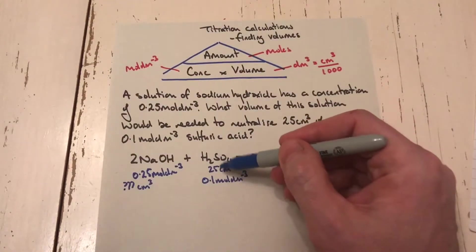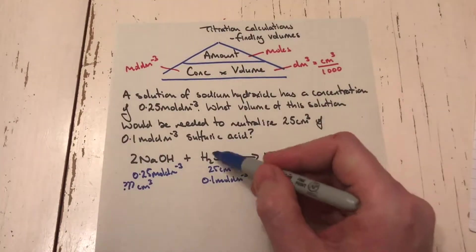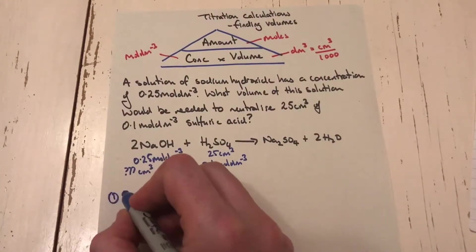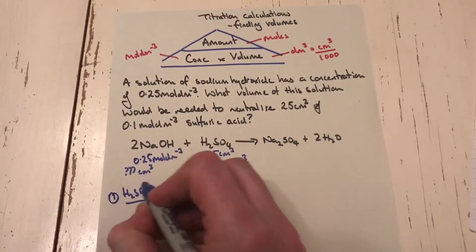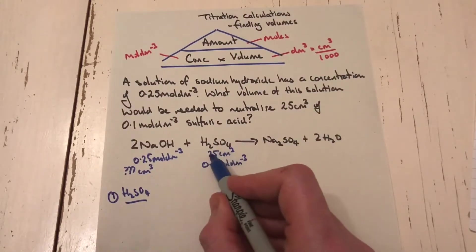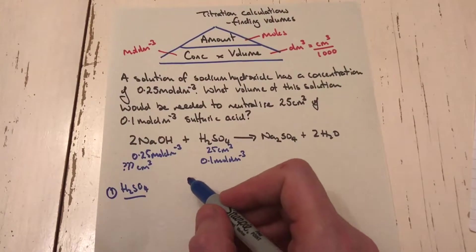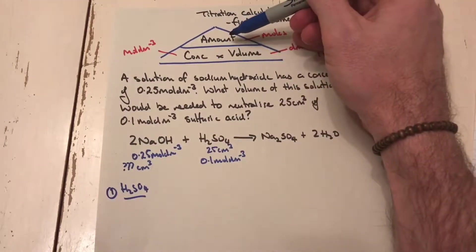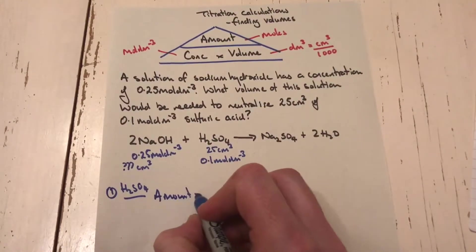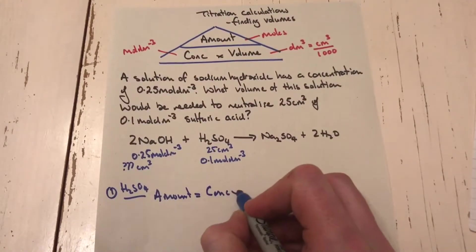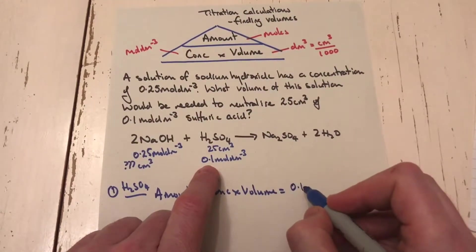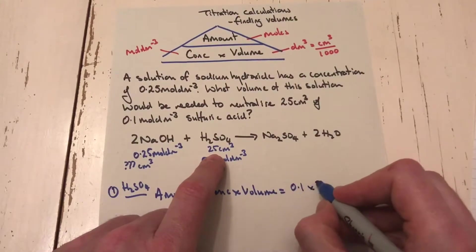I know two things about the sulfuric acid, so I start my calculation there. I need to find how many moles are in the 25 cm³ that reacted. Using the triangle: amount = concentration × volume. The concentration is 0.1 and the volume is 25 cm³.